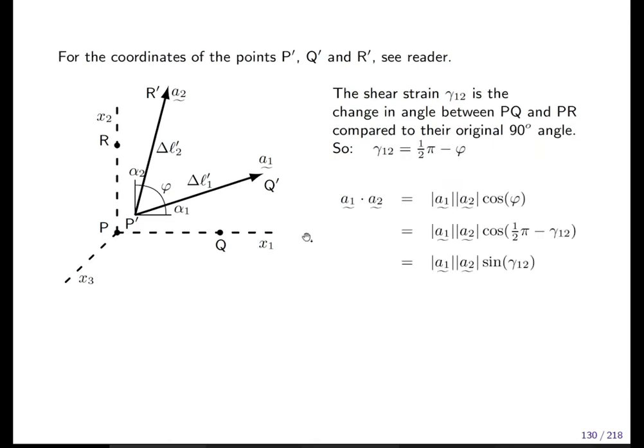Now we recall, we remember, we have to remember how to calculate an angle between two vectors. From PQ and PR, I know it's 90 degrees. From P'Q' and P'R', I do not know the orientation just like that, so I have to remember that I use the inner product, scalar product, which is giving us the norms of the two vectors and the cosine of the angle between the two vectors. So I have to calculate these two vectors, then I can calculate the cosine of the angle, and then I can calculate the shear strain.